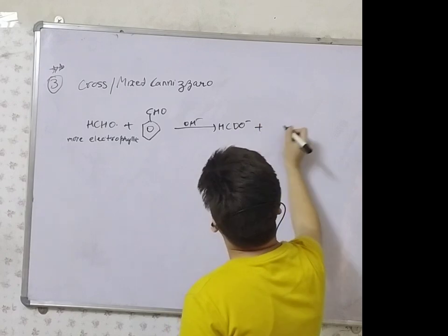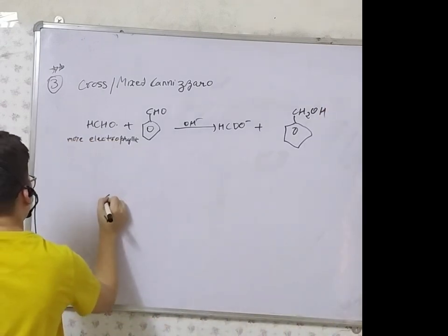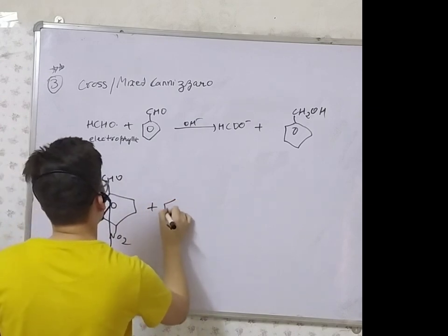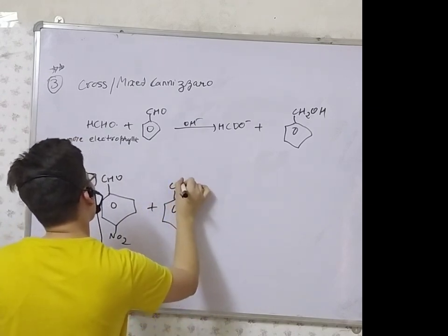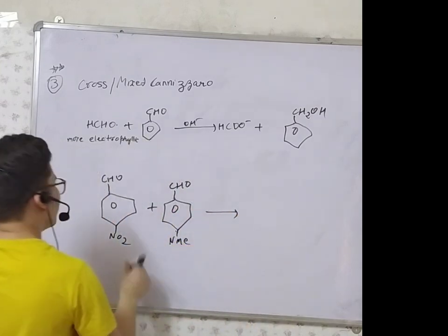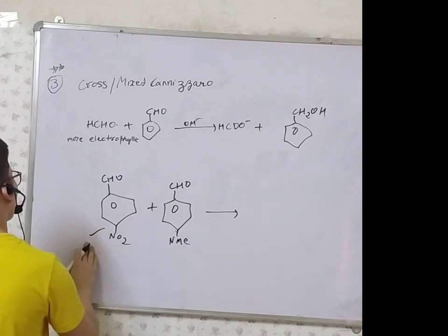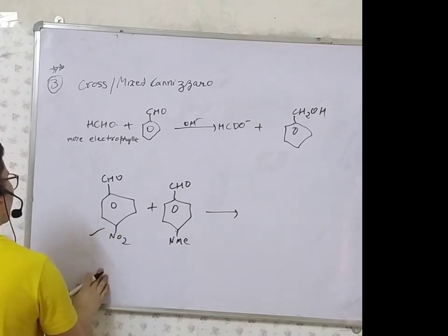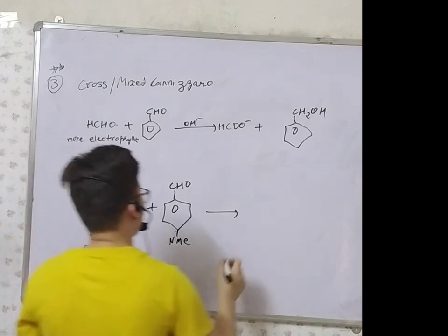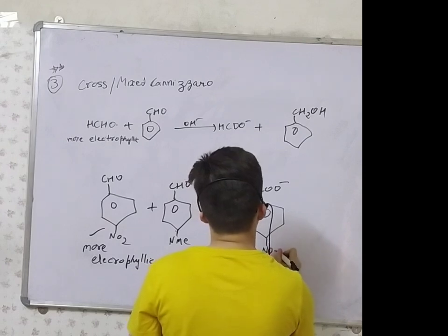In the cross-Cannizzaro example, formaldehyde (HCHO) is more electrophilic and oxidizes to COO⁻. The other aldehyde — which has a nitro group at the para position, making it more electrophilic — also oxidizes to the acid (COO⁻), while the less electrophilic aldehyde reduces to the alcohol.